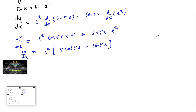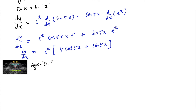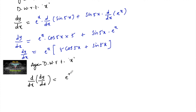Now let's differentiate again with respect to x. We have d by dx of dy by dx, so d squared y by dx squared. Applying the UV rule again: e power x into d by dx of 5 cos 5x plus sin 5x.